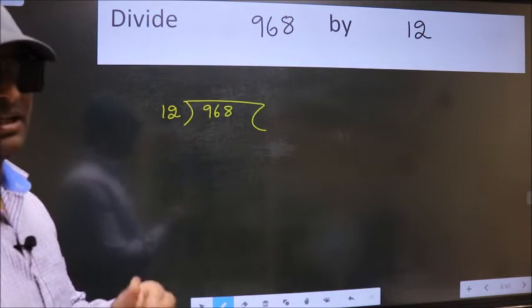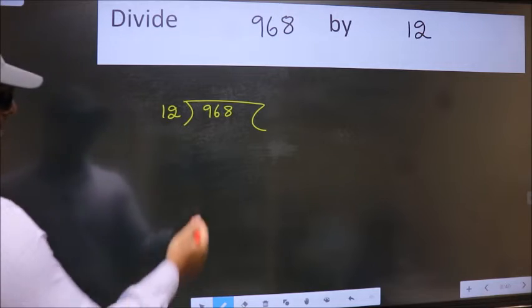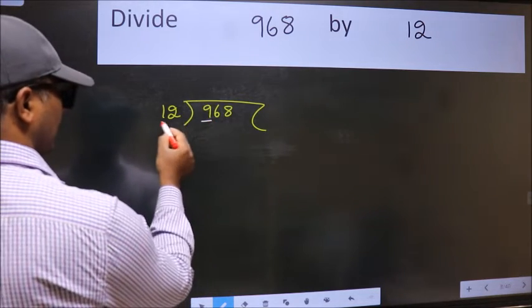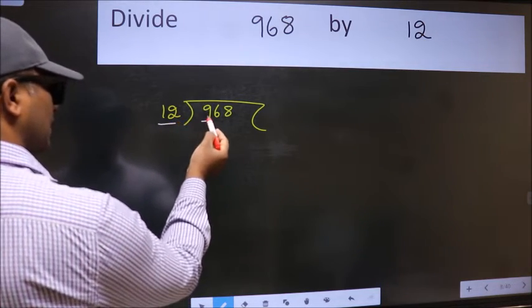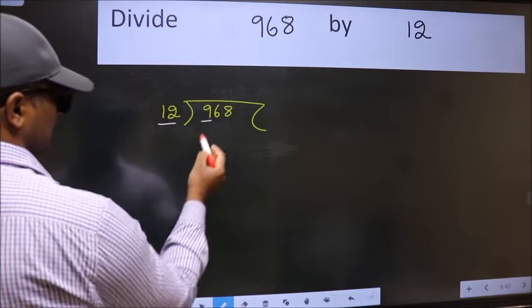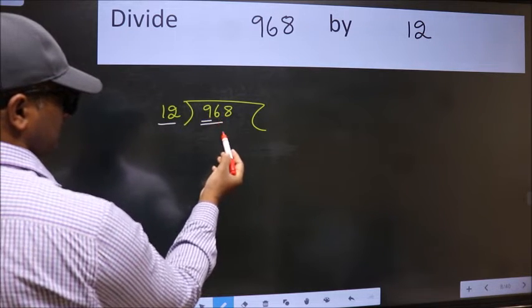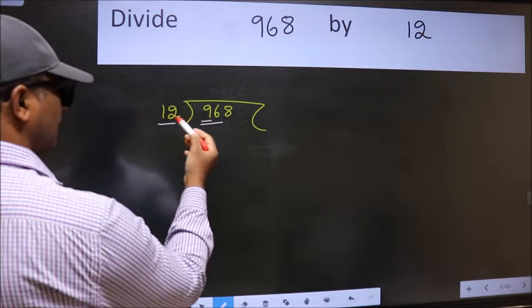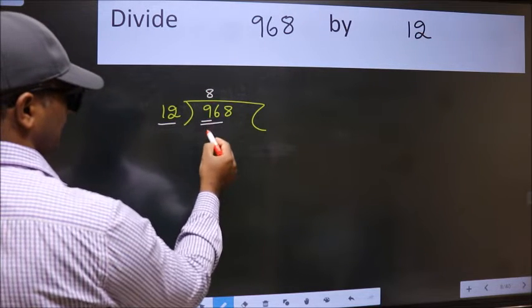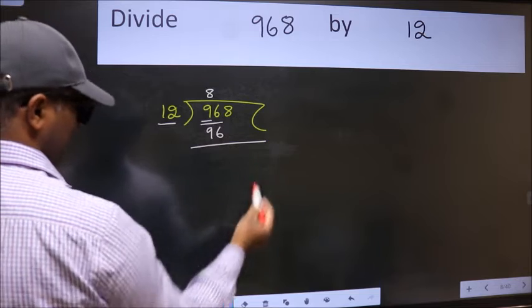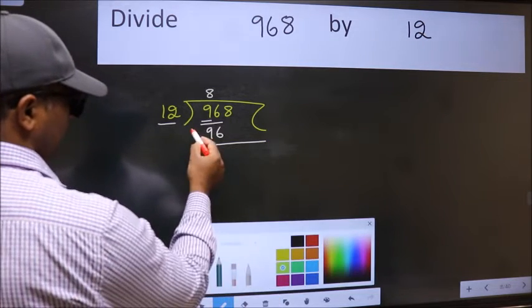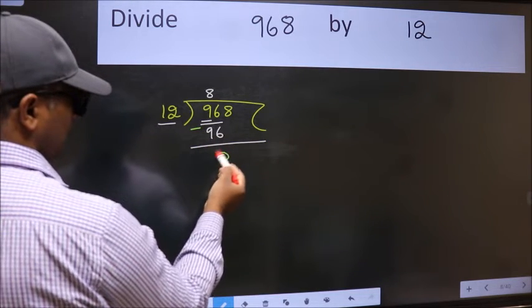Next, here we have 9 and here 12. 9 is smaller than 12, so take two numbers: 96. When do we get 96 into a table? 12 times 8 is 96. Now we should subtract, we get 0.